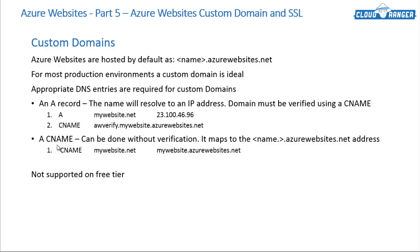There is another way: the CNAME method. It can be done without verification because you are basically just forwarding the domain — it maps to the same azurewebsites.net address. All you have to do is go to your DNS, create a CNAME record with no verification needed, and say your custom domain name is forwarded to mywebsite.azurewebsites.net. I'll go through an entire example today of how to do this in real life so you can follow along in production.